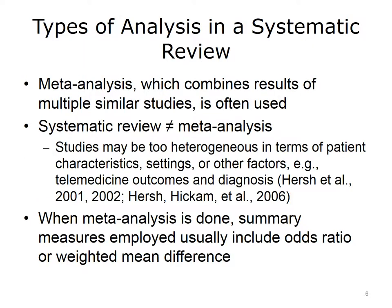Systematic reviews often use meta-analysis where the results of multiple studies that are appropriately similar are combined. If we have multiple studies that have looked at, for example, the use of a treatment in a disease with a certain patient population, it's appropriate to combine these studies in a meta-analysis, which gives us more statistical power. When we have a larger sample size, it's easier to achieve statistical significance. We don't have to do a meta-analysis in a systematic review. In fact, if the studies are too heterogeneous because there are different patient characteristics, different settings, or other factors, it would be inappropriate to combine them in a meta-analysis.